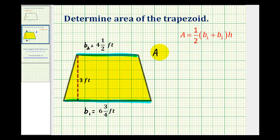So the area is going to be equal to one half times six and three fourths feet plus four and a half feet times three feet. Now first thing we need to do is determine this sum here.